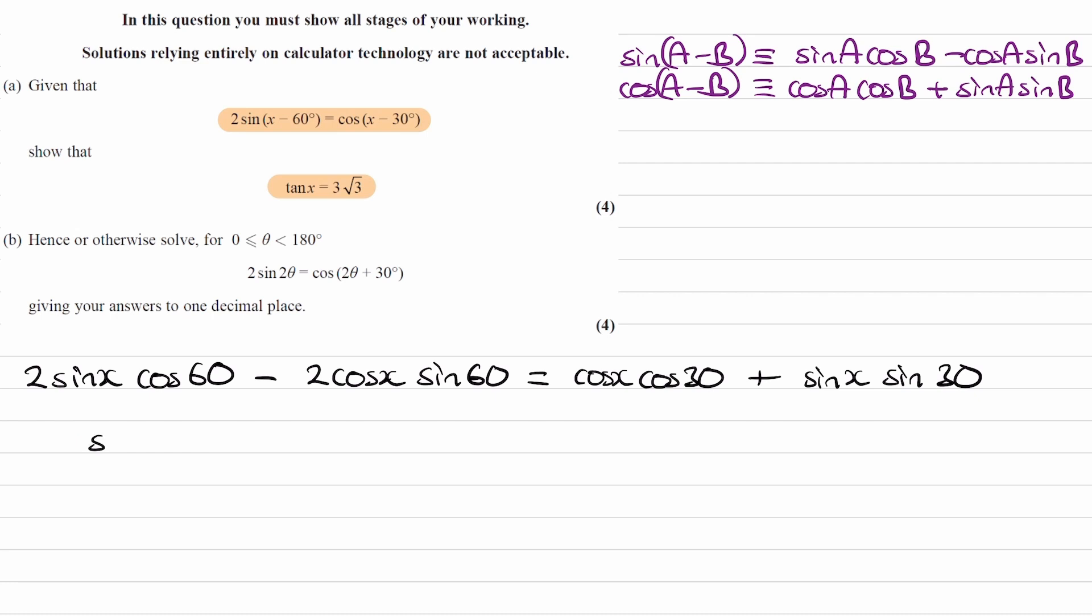And then for the second term, 2 times sin 60°, sin 60° is equal to √3/2. This then becomes -√3 cos x. Cos 30° is equal to √3/2 as well. And sin 30° is equal to 1/2.